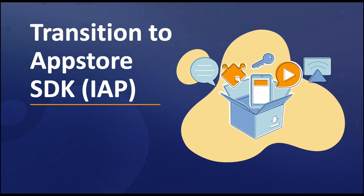Let's get into the technicalities of how to update your app to the Amazon SDK for in-app purchasing. Before we jump in, it's important to note that the App Store SDK requires devices to have at least Android API level 14 or higher.